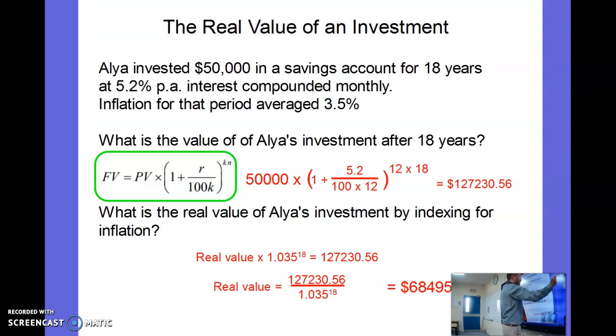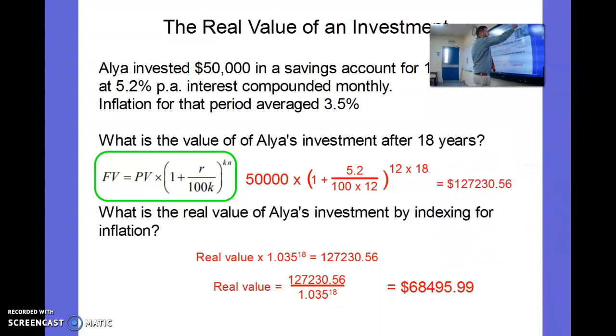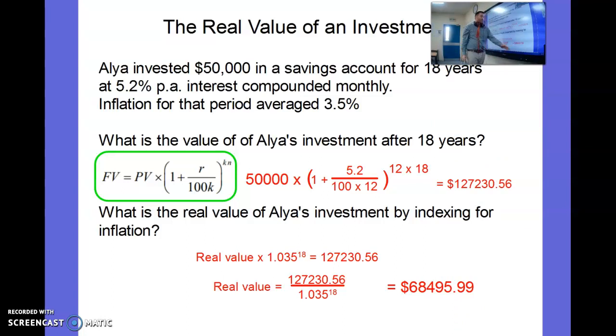And when I do that, we find out that actually the real value of Alya's investment was $68,495.99. So not quite as impressive, but still that was a good investment. That $50,000 did indeed increase by about $18,495.99.